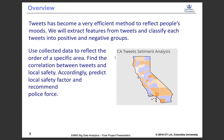Here is the overview of our project. As tweets have become a very efficient method to reflect people's mood, we will extract features from tweets and classify each tweet into a positive or negative group. Then we will use the collected data to reflect the order of a specific area and find the correlation between tweets and local safety.